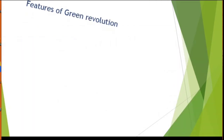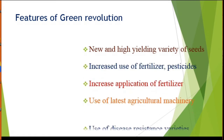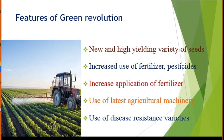Features of Green Revolution — there are five features. First, introduction of new and high yielding variety of seeds. Second, increased use of fertilizers and pesticides. Third, increased application of fertilizer to enhance agricultural productivity. Fourth, use of latest agricultural machinery such as tractors, seed drills, threshers, and harvesters. Fifth, use of disease resistant varieties to enhance production.